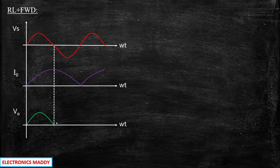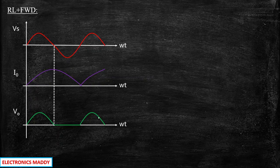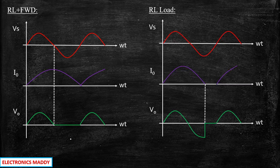During the negative half cycle, the output voltage becomes equal to zero, because the freewheeling diode is conducting and acts as a short circuit. Then in the next cycle, during the positive half cycle, vout again equals the supply voltage since diode D conducts and whatever is supplied is available at the load terminals. To understand what we infer about the freewheeling diode, we need to compare with the previous waveform from the RL load video.